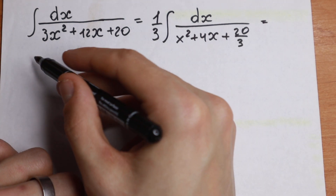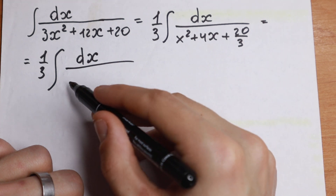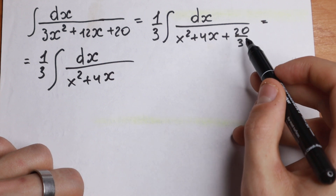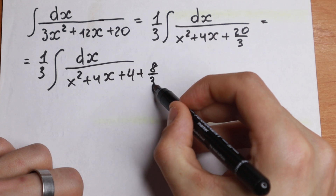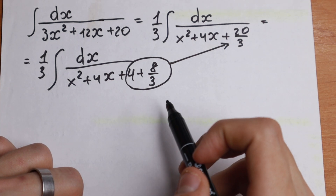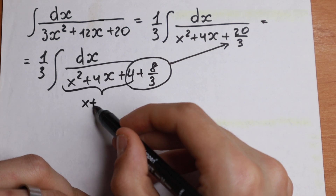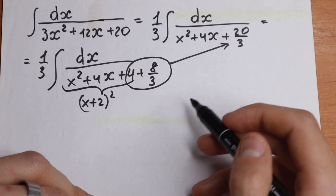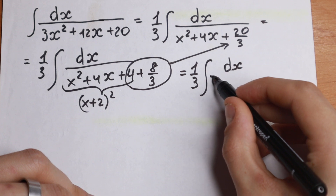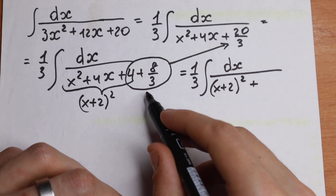Next, I want to rewrite 20 thirds. Looking at our integral — 1 third times the integral of dx over x squared plus 4x plus 20 thirds — I want to write 20 thirds as 4 plus 8 thirds. The reason is that if we group x squared plus 4x plus 4, we get the perfect square formula: x plus 2, squared.